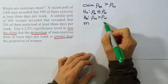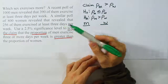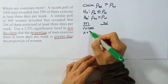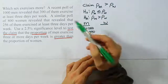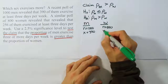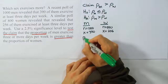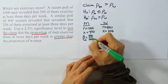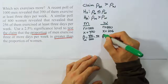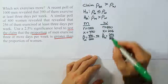Now let's get the data. For men: a poll of 1,000 men revealed that 390 of them exercised at least three days per week. For women: N is 800, and 256 of them exercised at least three days per week. We calculate p-hat for men as 390 over 1,000, which gives 0.39. For women, 256 over 800 gives 0.32.